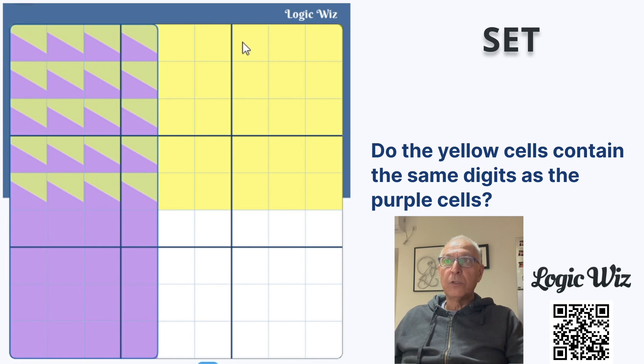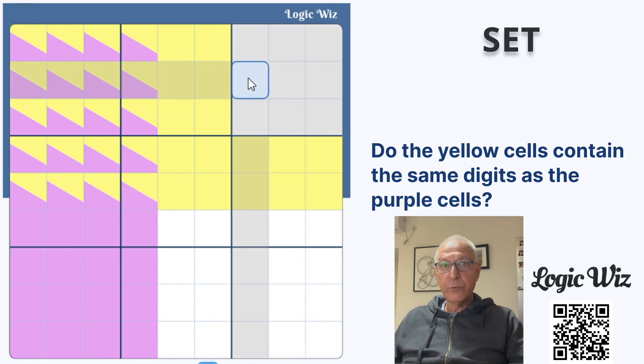Now I'm going to remove this set of the yellow. Okay, and right now we have four sets of 129 in yellow, four sets of 129 in purple.